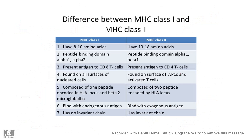Here is a quick summary of the differences between MHC class 1 and class 2 molecules. The major differences include the structure of the peptide binding groove. MHC class 1 has lower carrying capacity — it can carry only 8 to 10 amino acids — whereas MHC class 2 can carry 13 to 18 amino acids.